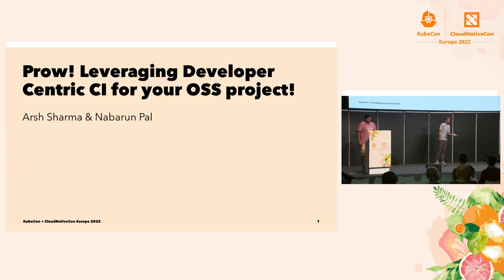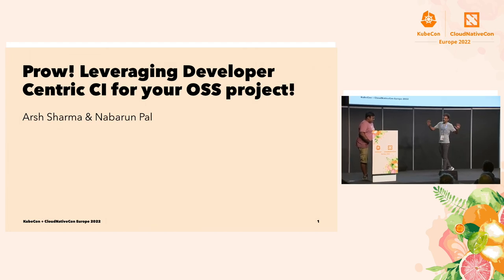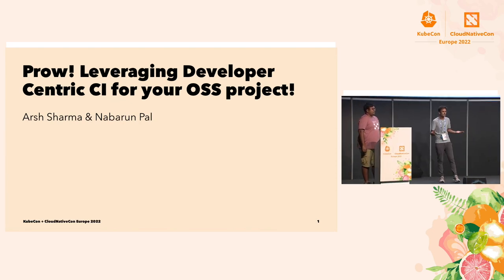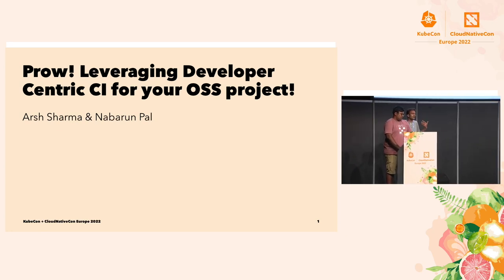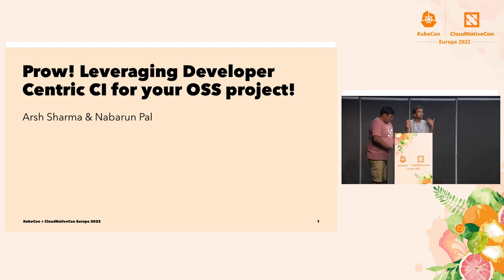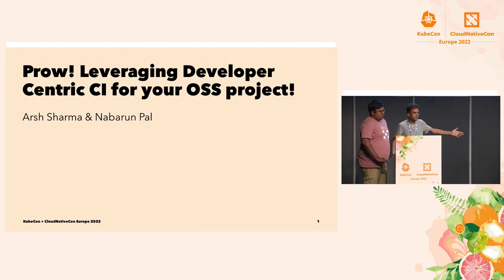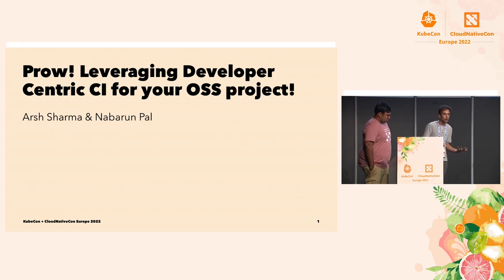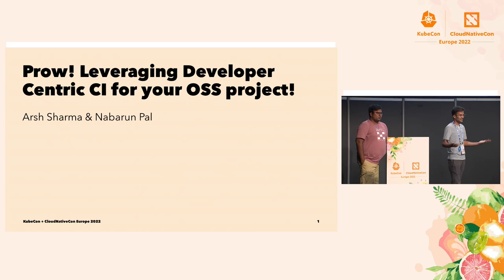Just a couple of days ago at the contributor summit, we actually met someone who was trying to implement Prow, which we'll cover. They faced a lot of trouble, and that reinforced our belief that Prow is something every contributor who has made a pull request to Kubernetes is at least somewhat familiar with. They've seen it comment on their PR or issue, but when it comes to installing it or understanding what is happening behind the scenes — how it is working — that is not clear.